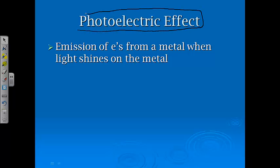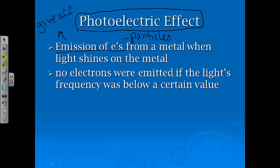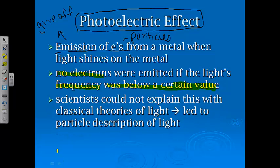The first experiment was the photoelectric effect. The photoelectric effect happened when an emission of electrons came from a metal when light was shined on that metal. Emission is just a fancy word for give off or produce. The more important thing is they took this light and they shined it on a metal, and you got particles. It was kind of like putting in apples and getting oranges. No electrons were emitted if the light's frequency was below a certain value. There had to be something about the frequency of that light to cause those particles to be given off. Scientists could not explain this with classical theories of light, so it led to the particle description of light.